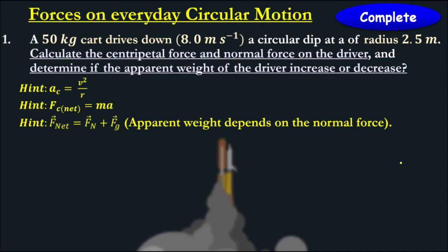The very first question we have is a 50 kilogram cart that drives down at this particular speed in a circular dip. Try and imagine what that looks like. We have our dip down here and we have a car that's moving down at the very point here. It says calculate the centripetal force and normal force on the driver and determine if the apparent weight of the driver increases or decreases.